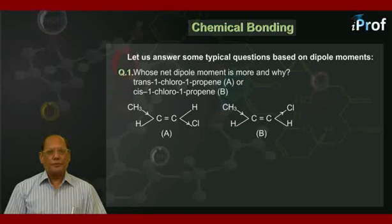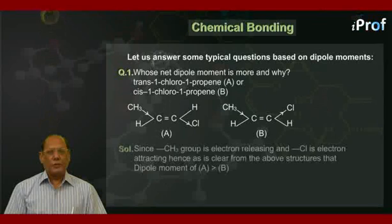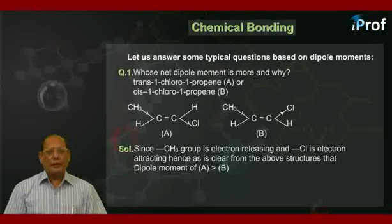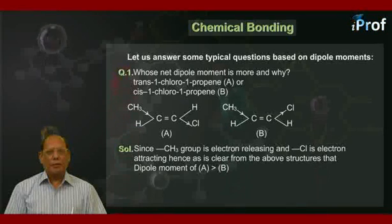The answer is, since methyl group is electron releasing, and chlorine atom is electron attracting, as is clear from the above structures, the dipole moment of A is bound to be more than that of B.